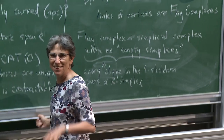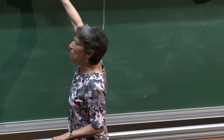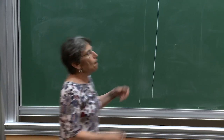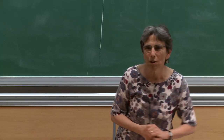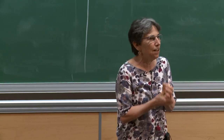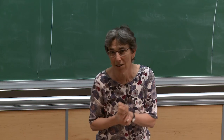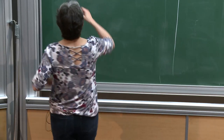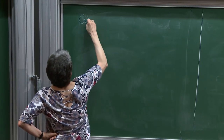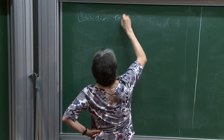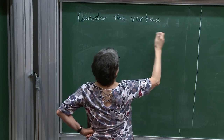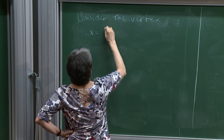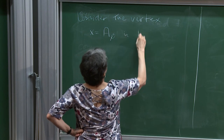We're going to look at cliques in the link and ask whether they span simplices. So we need to understand the links of vertices in D(γ). I'm not going to do a complete proof — I'm going to look at the link of a particular vertex where you already see what can go wrong.